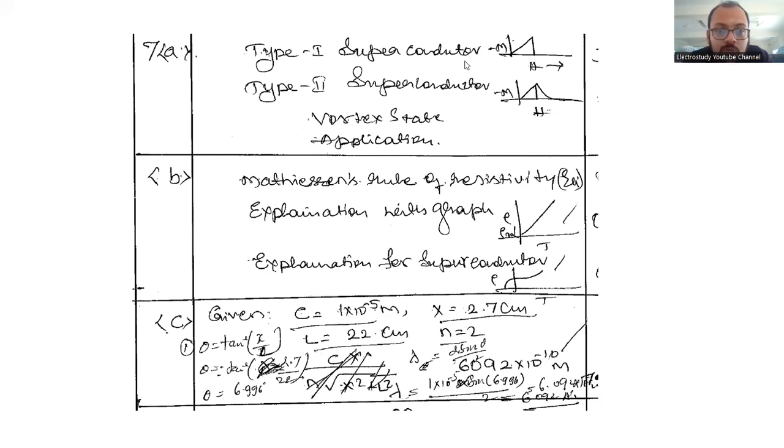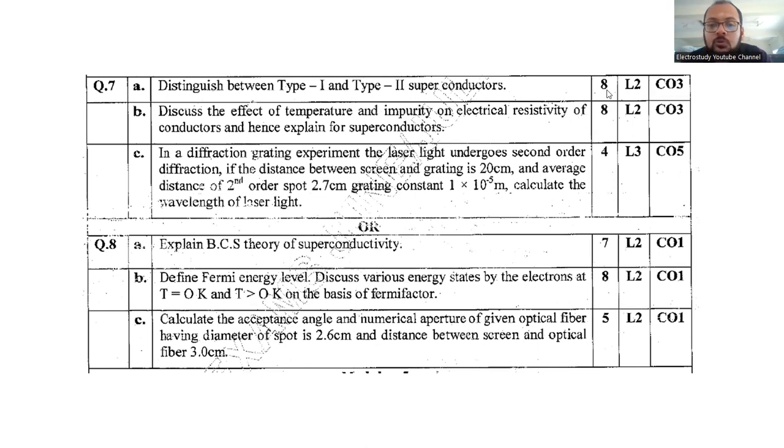You need to explain with the help of graphs and technical content. As you can see for 7a, for type 1 superconductor, include the waveform and graphical representation. For type 2 superconductor, you should put this particular graph. Talk about the vortex states and applications. Try to add more technical content - maintain at least one and a half pages. This question carries 8 marks.